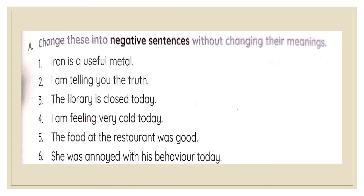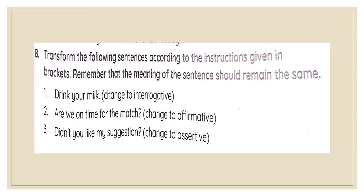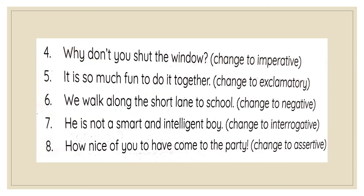Now based on this understanding, change these into negative sentences without changing their meanings. 'Iron is a useful metal' becomes 'Iron is not a useless metal.' 'I am telling you the truth' becomes 'I am not telling you a lie.' 'The library is closed today' becomes 'The library is not open today.' Do the rest of these sentences on your own. For exercise B, transform the following sentences according to the instructions given in brackets, remembering that the meaning should remain the same. 'Drink your milk' — change into interrogative — 'Will you drink your milk?' 'Are we on time for the match?' — change to affirmative — 'We are on time for the match.' Do the rest on your own.